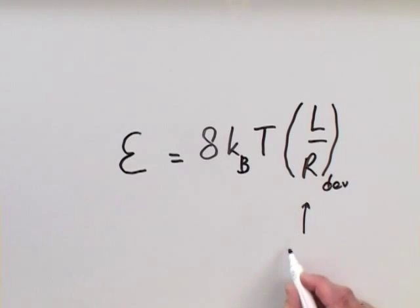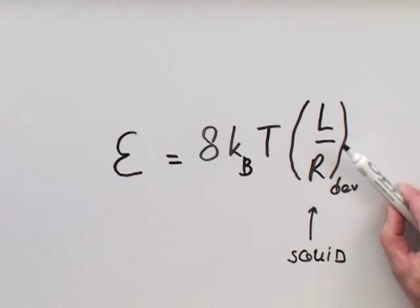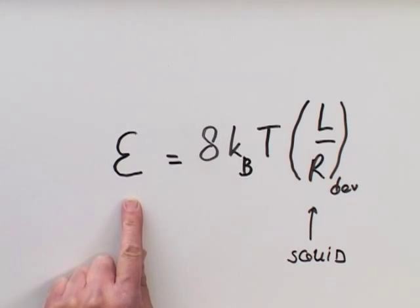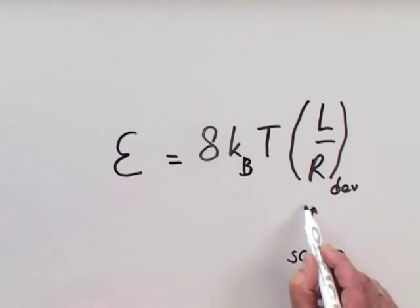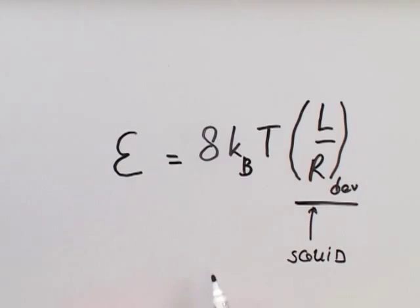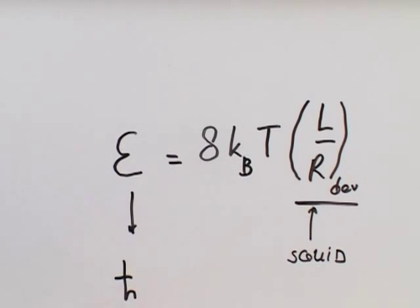We can say, here we have the SQUID. We have here some parameters that we can optimize. You could maybe say, take L is zero after SQUID. Fine, you have epsilon is zero, but you cannot measure anything. So you will never be able to detect something. So the difficulty is already, have a good practical SQUID and get here a resolution which is in the order of h bar.